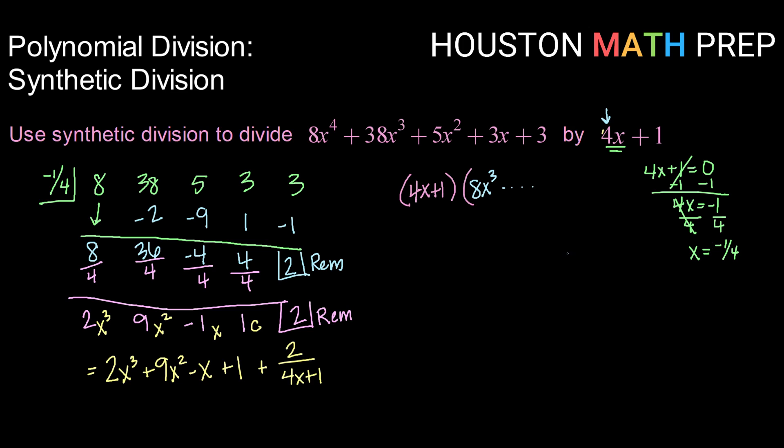We know that to check any division problem, we could do multiplication to see if we get back to our original answer. If I did 4x times 8x cubed, that would give me 24x to the fourth as my first term. But I'm supposed to have 8x to the fourth. So that's not right.